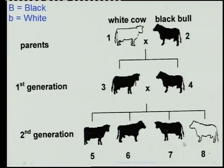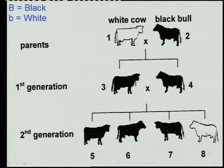From this, it's easy to deduce that the recessive characteristic is the white - that is the white cow. And because cattle one and eight are recessive, we can deduce that they must be homozygous.